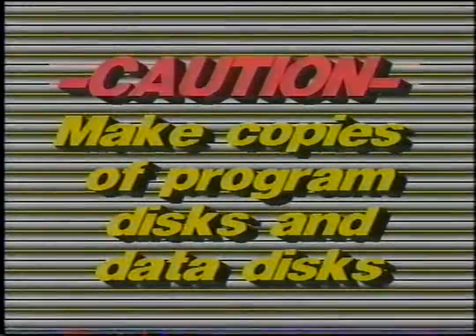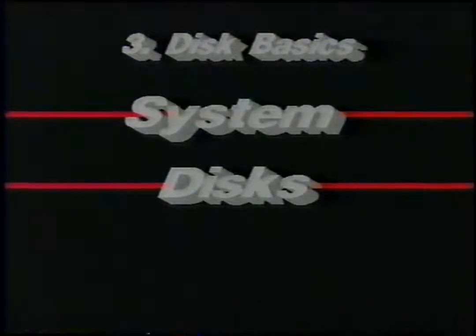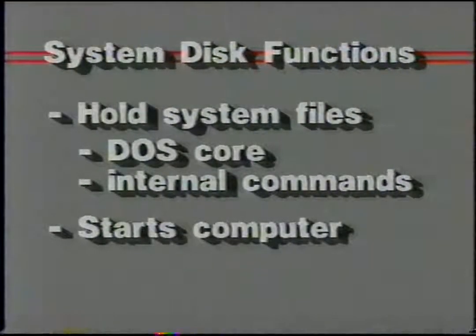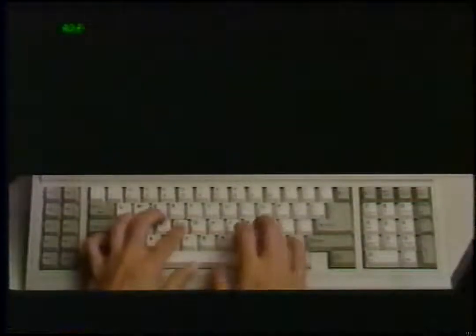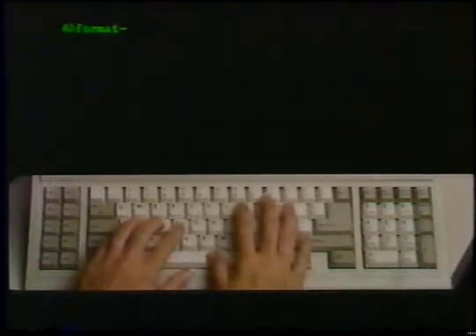Always make a working copy of any master disk before using it — this includes disks with application programs as well as DOS masters. Also make backup copies of data disks. If a data disk is in daily use, back it up at least once a day. A system disk contains certain important files known as system files — these hold the DOS core and all DOS internal commands needed to start up your computer. Only a system disk can be used to boot the computer. The system file option of the FORMAT command makes a system disk: after the command name and drive name, use /S.